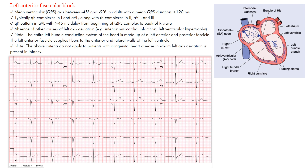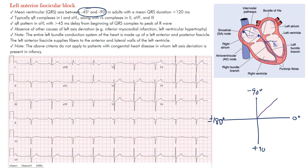So what are we looking for in left anterior fascicular block? Essentially you're looking for left axis deviation — in this case between negative 45 and negative 90 degrees. Looking at the axis diagram: zero degrees is here, positive 90 is here, plus or minus 180 is here, and negative 90 is here. The range between negative 45 and negative 90 is what puts us into left anterior fascicular block.